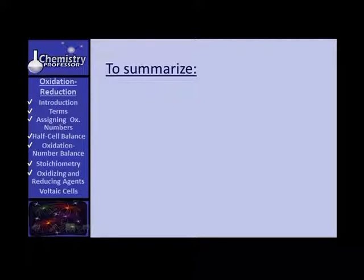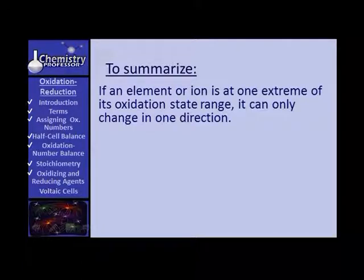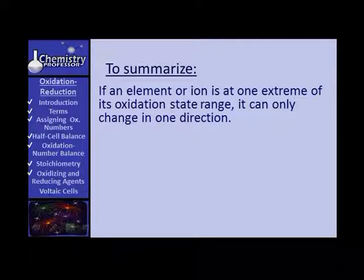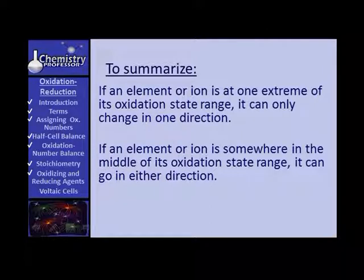To summarize this before we go on: if an element or ion is at one extreme of its oxidation state range, it can only change in one direction. For iron, if it's at zero, the only thing it could do would be to lose electrons. If an element or ion is somewhere in the middle of the oxidation state range, then it can go in either direction.